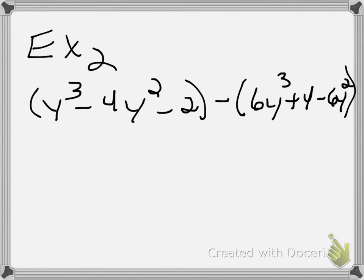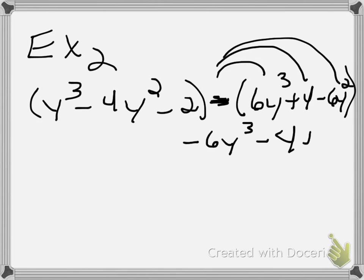This one is different because you have a minus sign. So you have to distribute this to all the terms that are contained in the parentheses that follow after it. That would result in -6y³ - 4y + 6y².